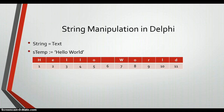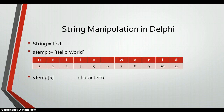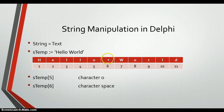If you want to refer to just one of those characters, you can use square brackets after the name of the string, and the number you put in will be the character you refer to. So 'sTemp[5]' will return just the letter 'o', and 'sTemp[6]' will return just the space character — although there's nothing visible there, it is actually a character.